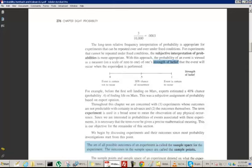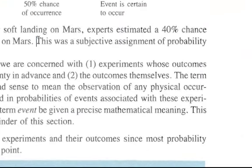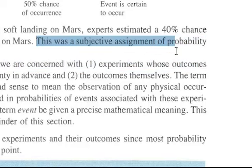For example, before the first soft landing on Mars, experts estimated a 40% chance of finding life on Mars. This was a subjective assignment of probability based on expert opinion.